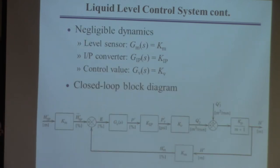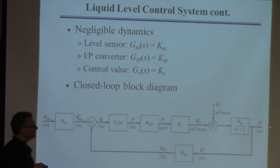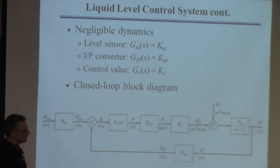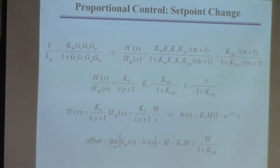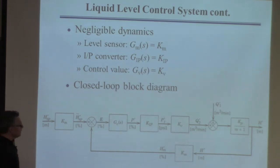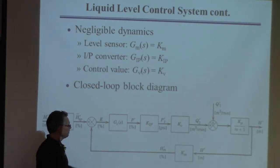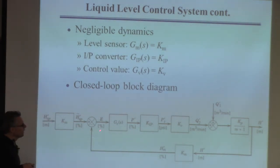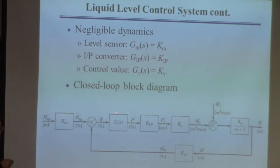For this kind of problem, we want to calculate the change in level when either the set point changes or the disturbance Q1 changes. Intuitively, if I change the set point, I'd like the level to follow it. If the disturbance changes, ideally it would have little or no effect on the level. I'm going to do several cases that differ by which input is changed and what controller is used — P, PI, or PID.